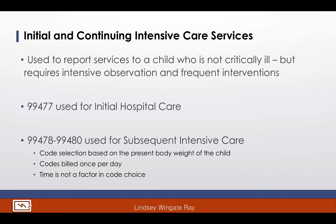Finally, in this subsection, we have initial and continuing intensive care services. This section of codes is used to report services to a child who is not critically ill but requires intensive observation, frequent interventions, and other intensive care services. CPT code 99477 is used for the initial hospital care. Codes 99478 through 99480 are used for subsequent intensive care and are selected based on the present body weight of the infant. Just like the intensive care codes, they are billed once per day and time is not a factor in code choice.